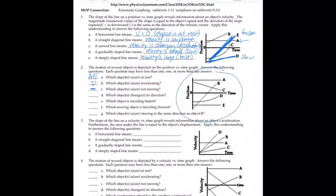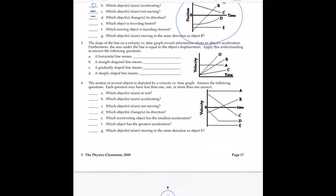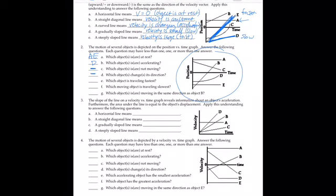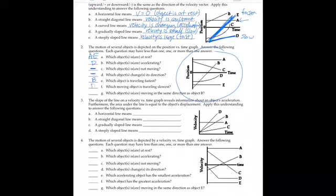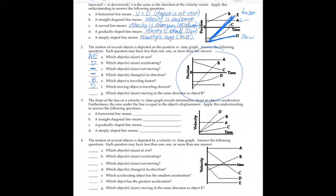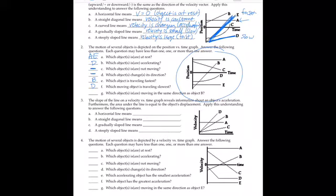Which objects are changing direction? None of them. Which object is traveling the fastest? That's B — it has the largest slope. Which object is moving the slowest? Looking at small slopes among B, C, and D — B is fast, so comparing C and D, D is actually the slowest because it has a very small slope compared to C's larger slope.